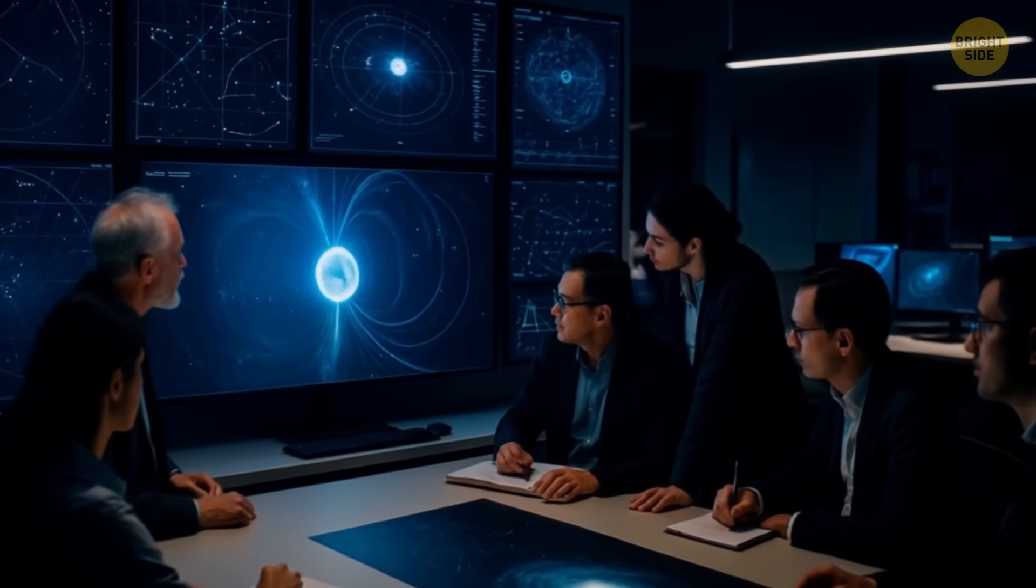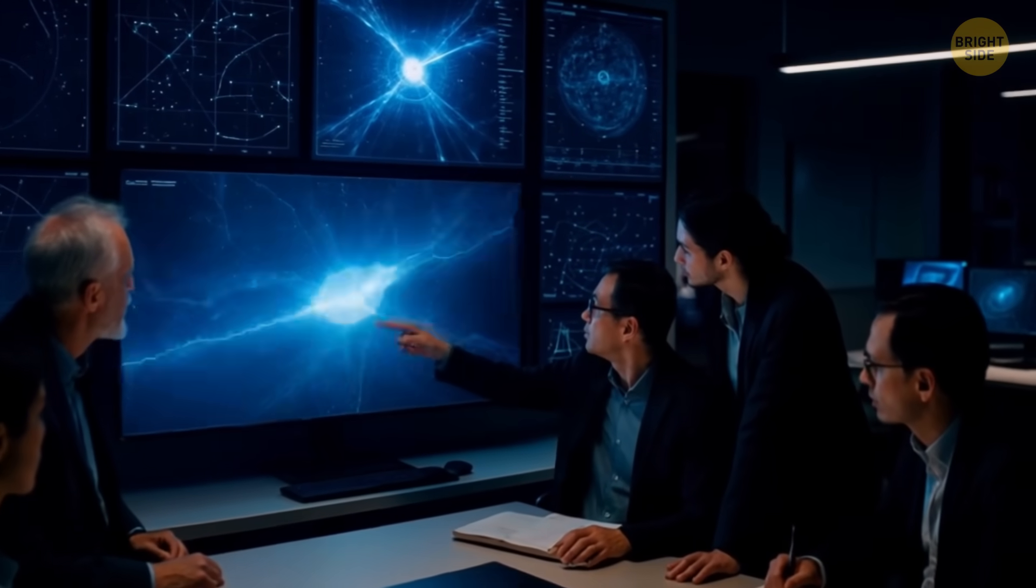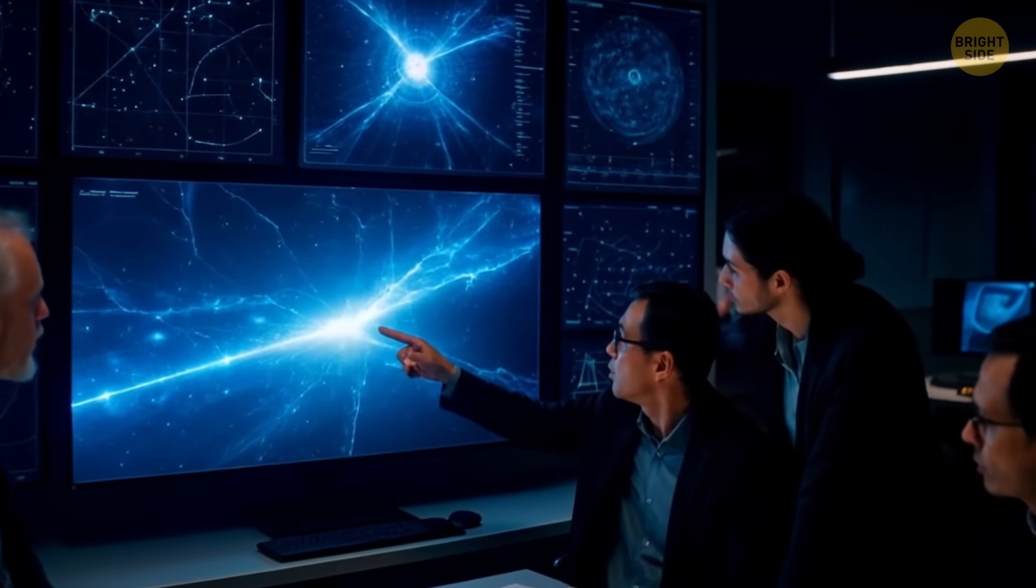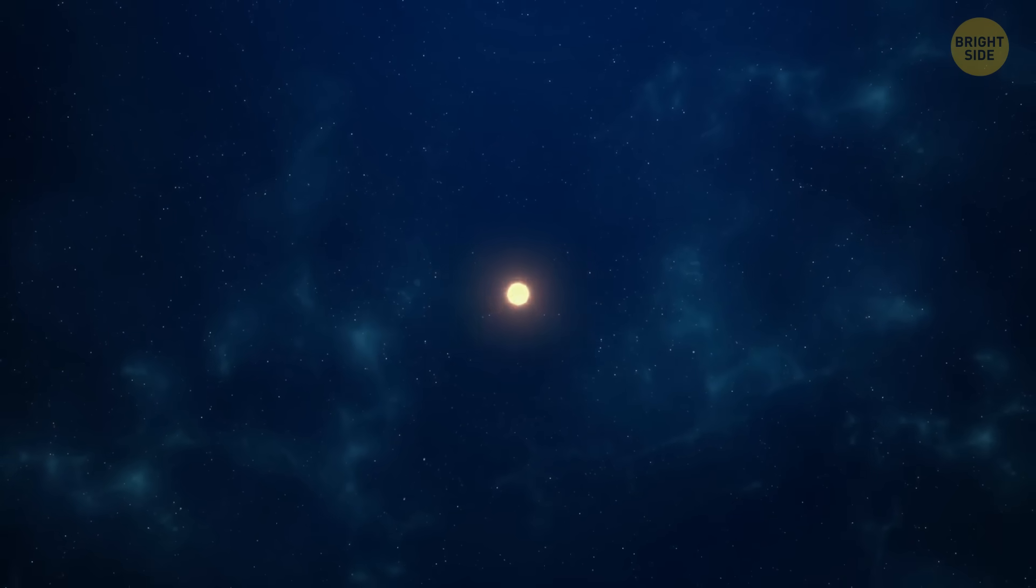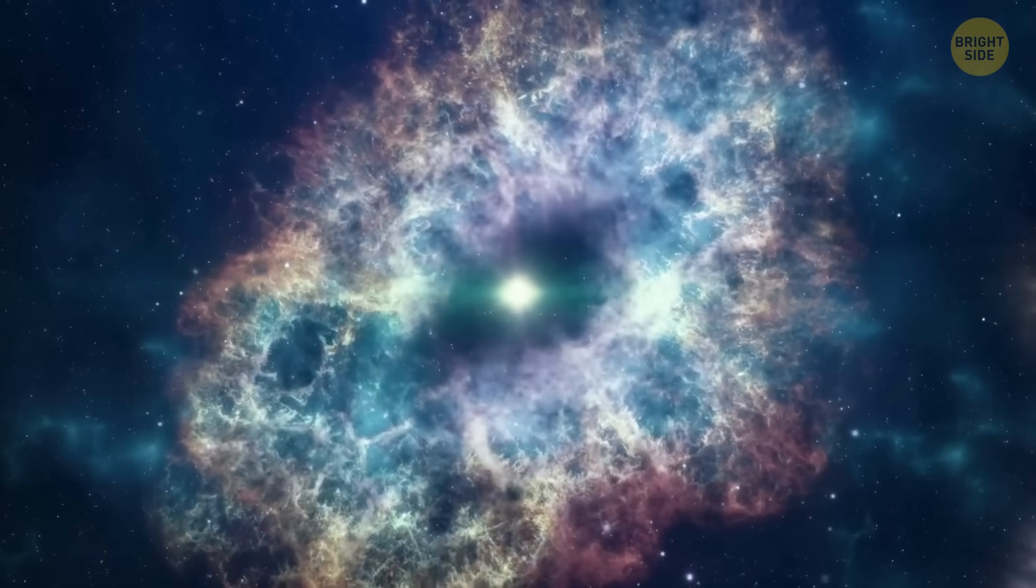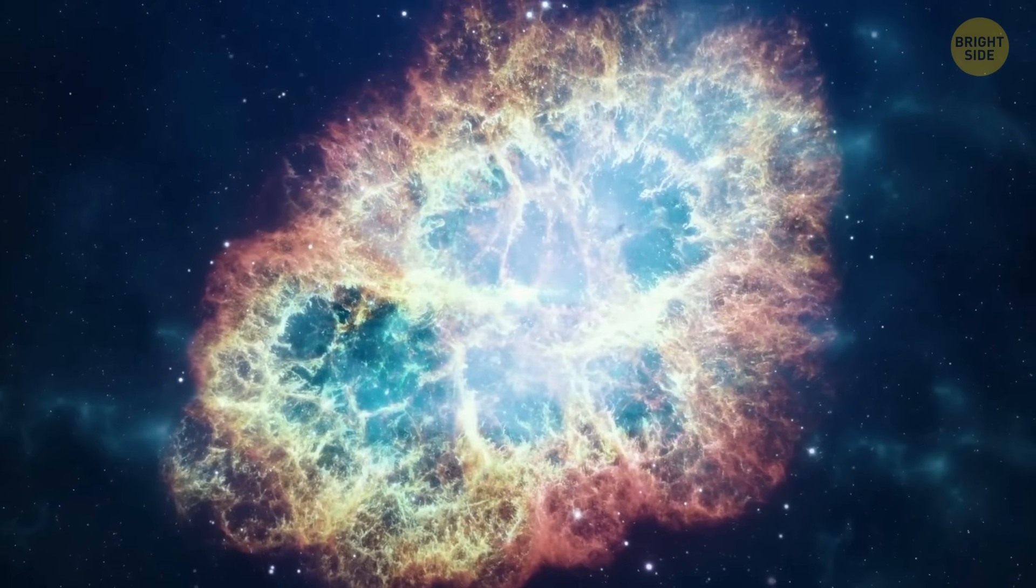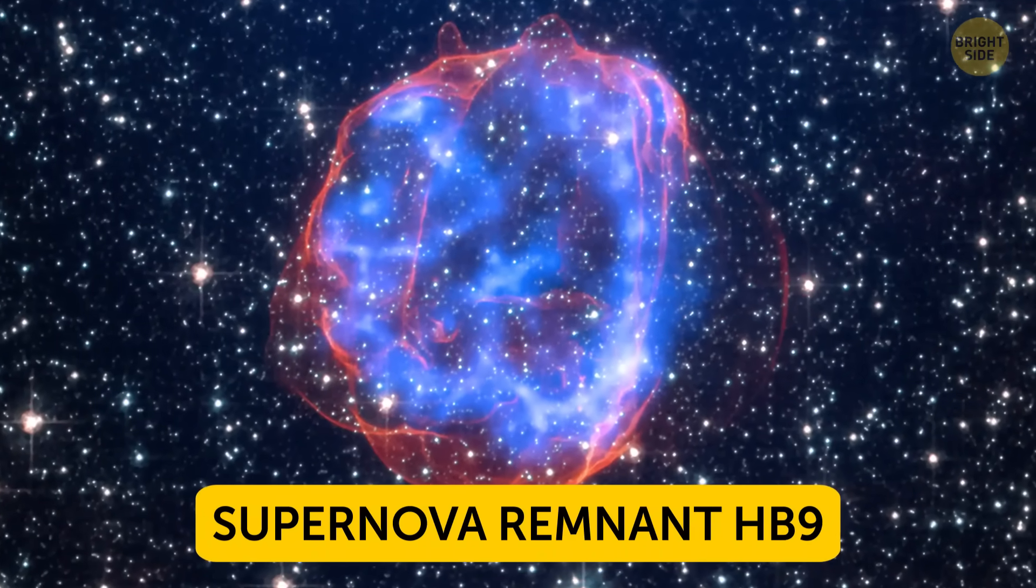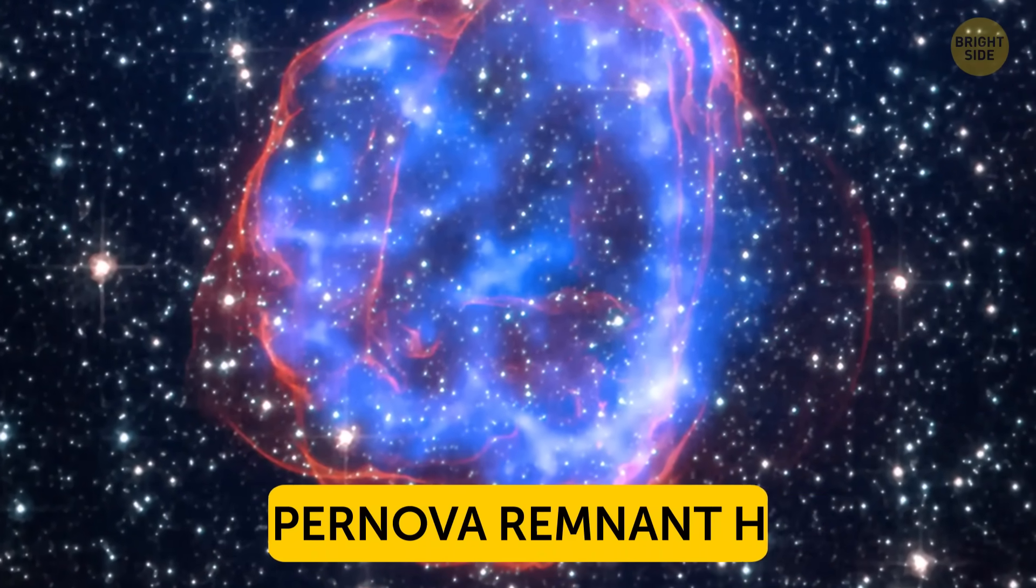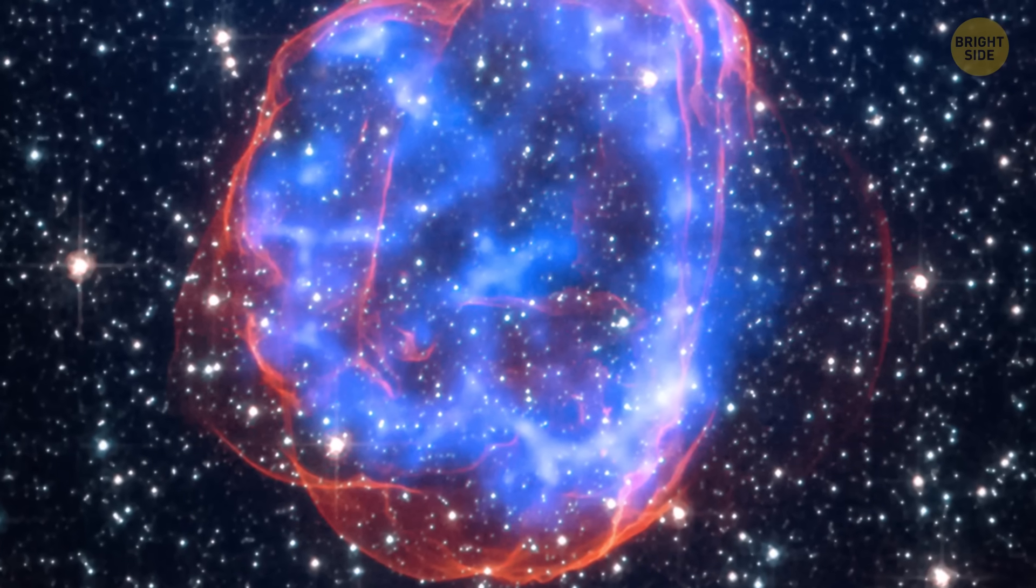Now astronomers are trying to figure out how this zombie star got such a big kick. At first, they thought that, like most magnetars, this one was born when a giant star exploded in a supernova and the leftover core became a super-dense neutron star. According to their theory, it could have happened near something called Supernova Remnant HB9. That would make sense since most magnetars are created this way.